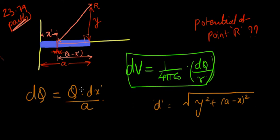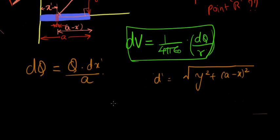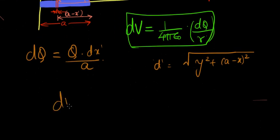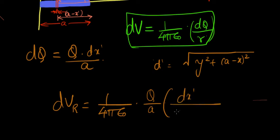Let's just substitute that for R here, and this for dq here. So we get dV at R equals 1 over 4 pi epsilon naught times q over A times dx prime over y squared plus A minus x prime the whole squared.